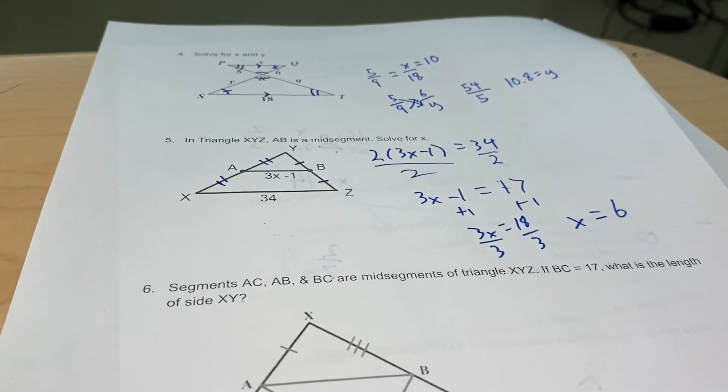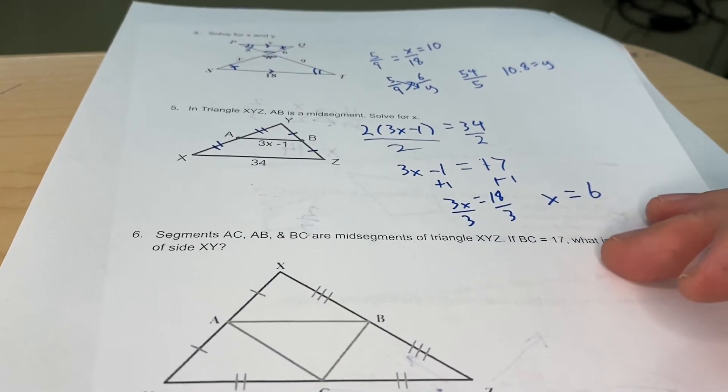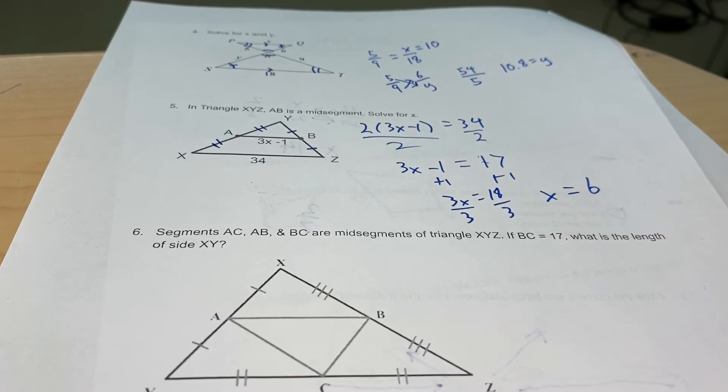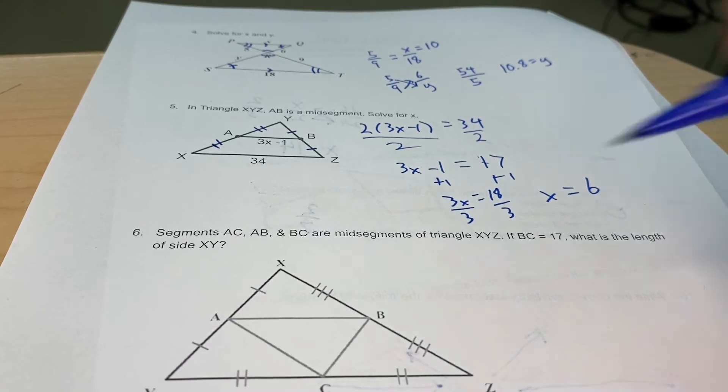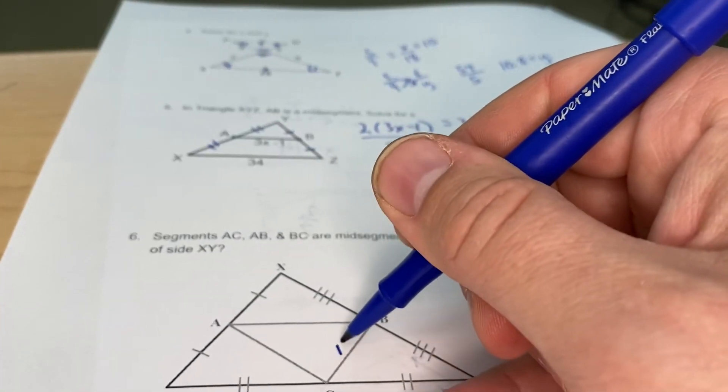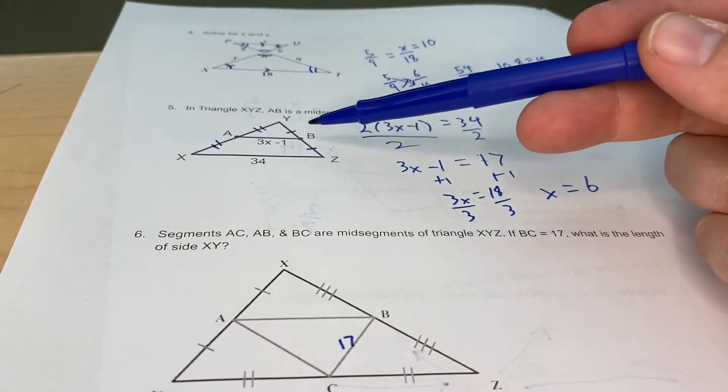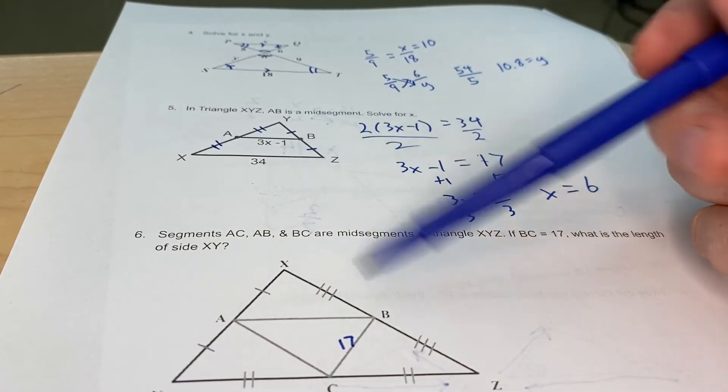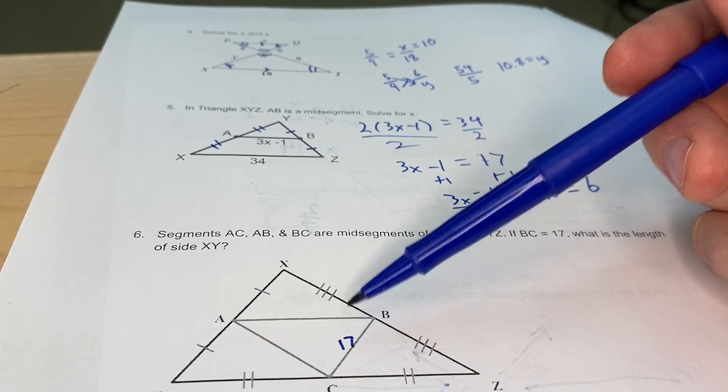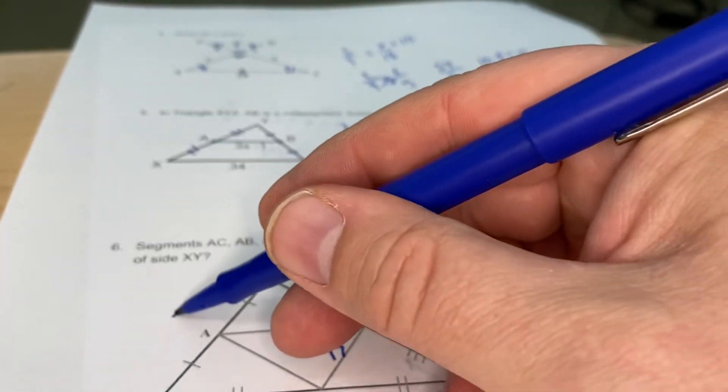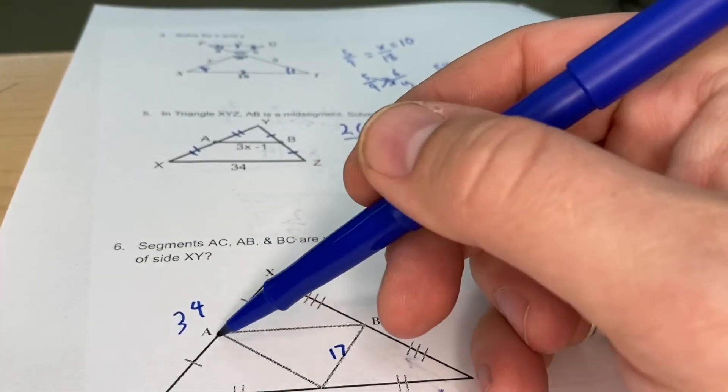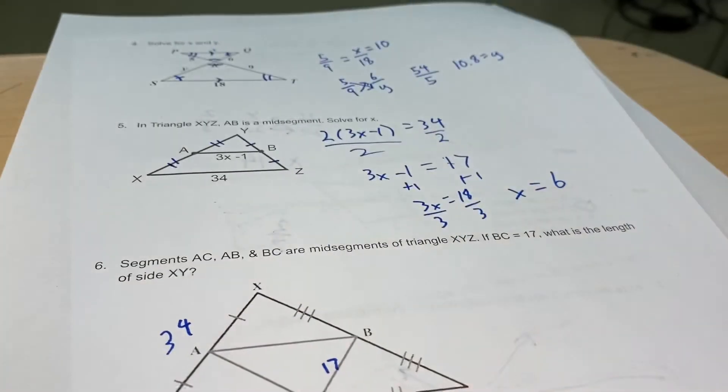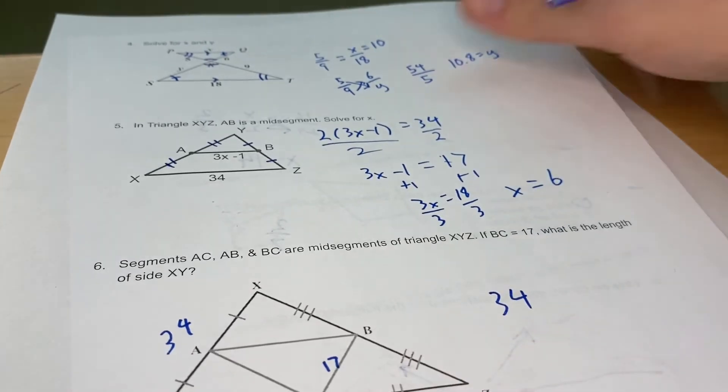Down here on the bottom, segments AC, AB, and BC are midsegments of triangle XYZ. If BC is 17, what is the side XY? So BC right here is 17. Again, it's the same as this question up here and it's actually the same numbers. If this is 17, this entire side here is going to be 34. Each one of these little segments would be 17. So that's just 34 for that side.